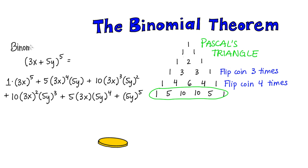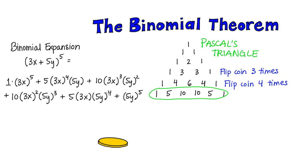This is called binomial expansion — it's a binomial expression since it has two terms, and expansion because we're taking it to the fifth power. Then all you have to do is simplify. Hopefully you've found some really cool connections between probability, statistics, and algebra. I hope you enjoyed this mini lesson.